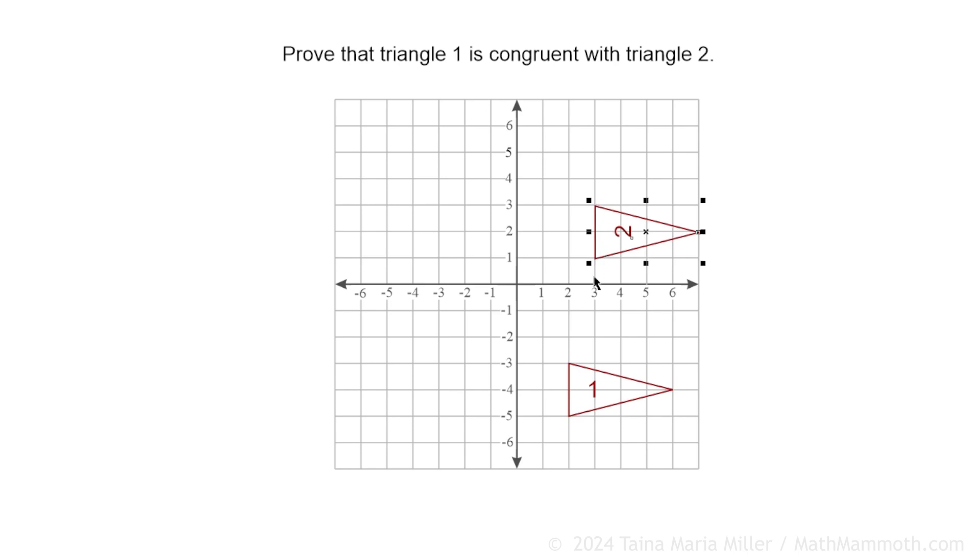This one will get translated 1, 2, 3, 4, 5, 6 units down and 1 to the left. 6 down, 1 to the left. So that then completes the proof showing that the two figures are congruent.